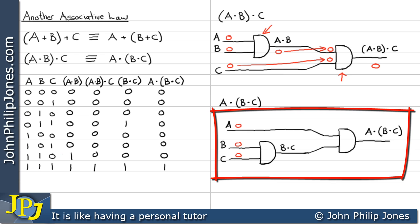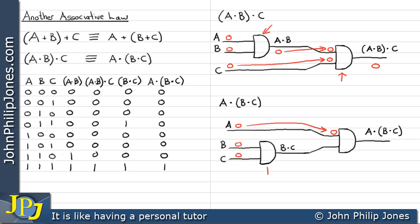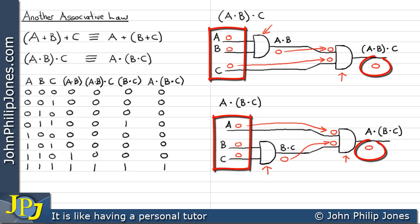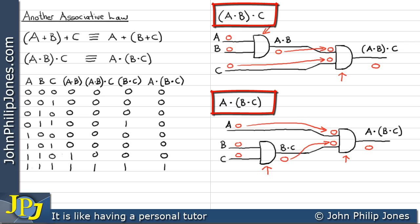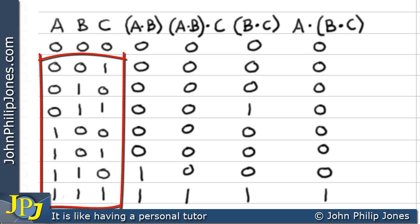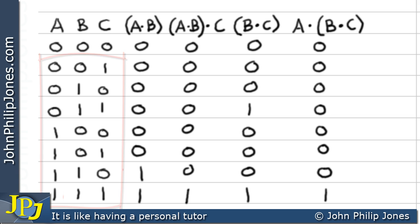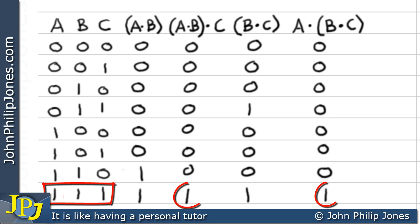In the second circuit, A is zero going into the first AND gate, which has zero and zero at its inputs, giving a zero output. That zero feeds the second AND gate, and with both inputs zero, the output is also zero. For all combinations of A, B, and C, the output is zero except the last case, where the output is one.